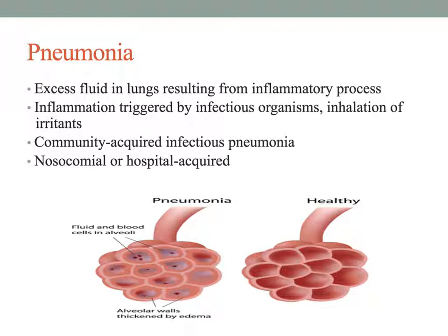The term pneumonia describes inflammation of certain parts of the lung, such as the alveoli and the bronchioles. Pneumonia may be caused by either infectious or non-infectious agents. Examples of infectious agents are bacteria, fungi, and nonspecific viruses. Non-infectious agents may include irritating fumes, dust, or chemicals that are inhaled, or foreign matter that is aspirated.